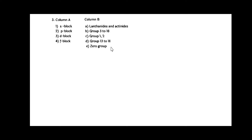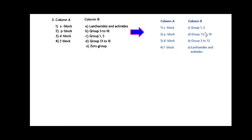Third question: in column A there are given different blocks — s-block, p-block, d-block, and f-block. In column B different groups are mentioned. The answer is: s-block belongs to group 1 and 2, p-block is group 13 to 18, d-block is group 3 to 12, and f-block covers the lanthanide and actinide series.